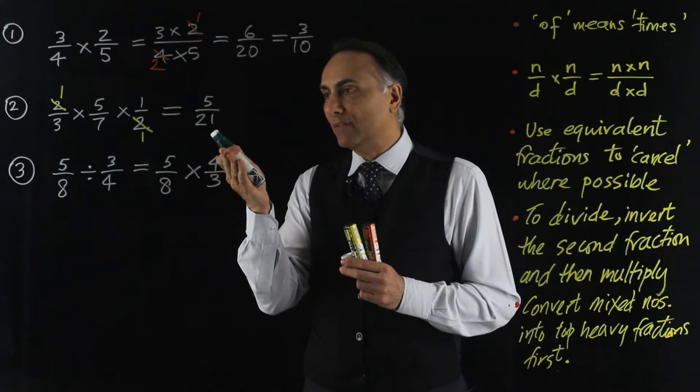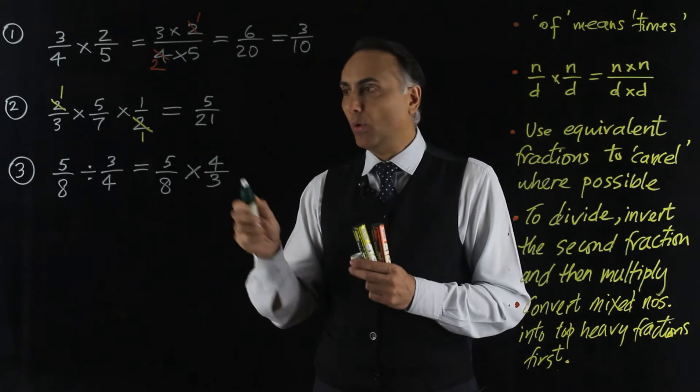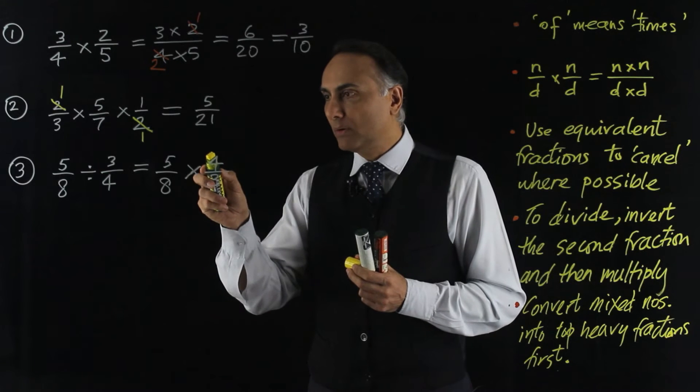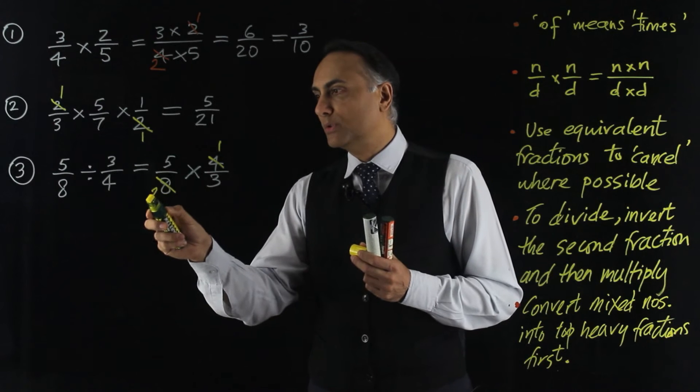Now I'm going to see if there's any cancelling down or reducing that I can do before I multiply out. And I notice that I've got a 4 on top and an 8 on the bottom, and they can both be divided by 4. When I divide 4 by 4, it reduces it to a 1.